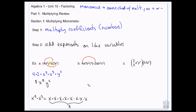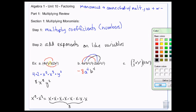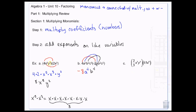So let's try this next one. I have 4 times negative 2, that gives me negative 8. And then I have a to the 3rd and a — there's nothing there, that's an invisible one — so it gives me a to the 4th, because 3 plus 1 more gives me 4. And then I have b squared and b squared, so 2 plus 2 is 4. And then I have c to the 5th and c squared, so 5 plus 2 is 7.